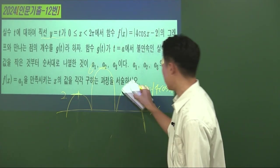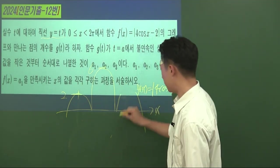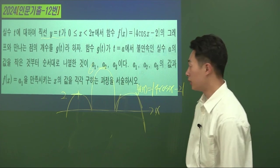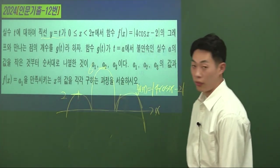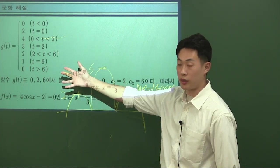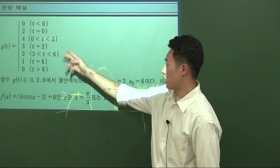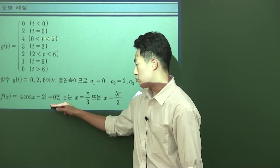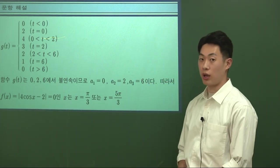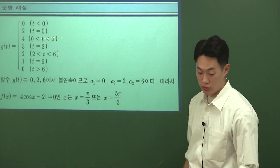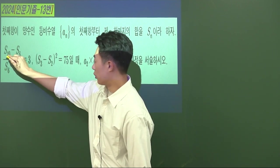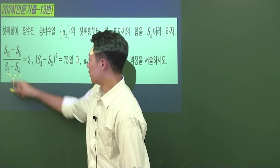1이 아닌 세 양수 A, B, C가 나와 있는데 로그가 이렇게 구성되어 있습니다. 각각의 값을 구하라는 문제인데, 감이 좋은 친구들은 바로 밑변환 공식이 떠오르겠죠. 위치 A로 같은 로그가 있으면 분모 분자를 로그 B에 C로 나타낼 수 있고, 그 결과가 7분의 6이므로 로그 B에 C는 7분의 6입니다.